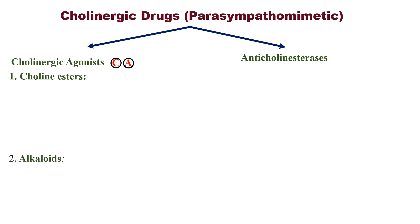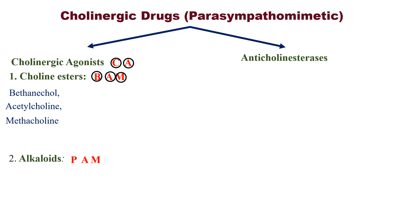For choline esters, remember the trick BAM, and for alkaloids, remember the trick PAM. In BAM: B for Bethanacol, A for Acetylcholine, and M for Metacholine. In PAM: P for Pilocarpine, A for Aracholine, M for Muscarine.